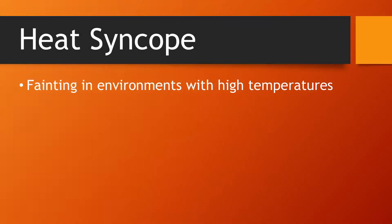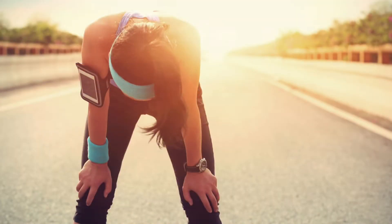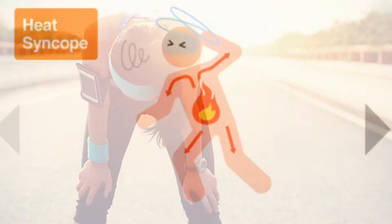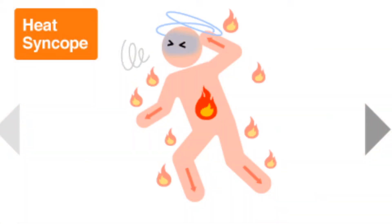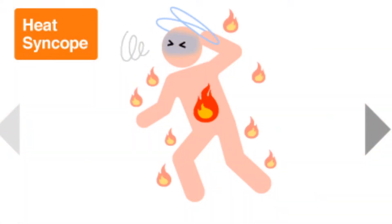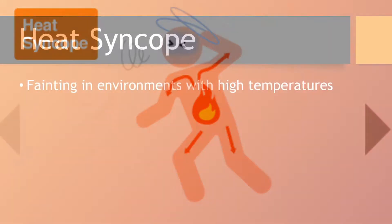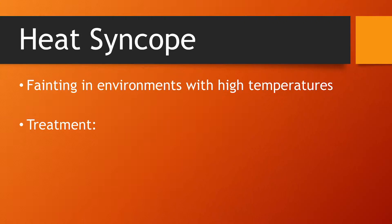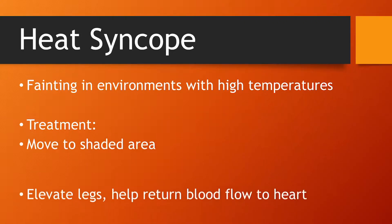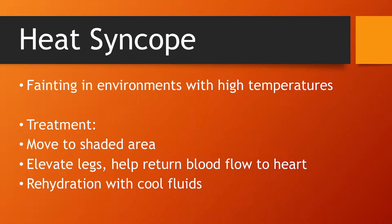Heat syncope refers to fainting in environments with high temperatures. This usually occurs during the initial days of heat exposure and is caused by inadequate blood flow to the brain, causing the person to lose consciousness. Move the person to a shaded or cool area, elevate their legs to help return blood flow to the heart, and rehydrate with cool fluids.